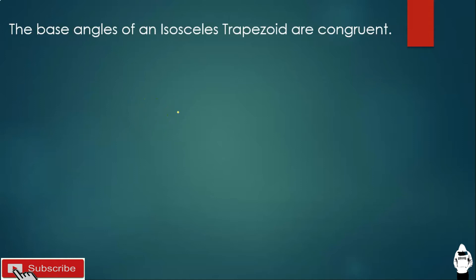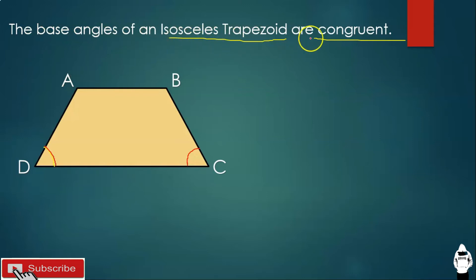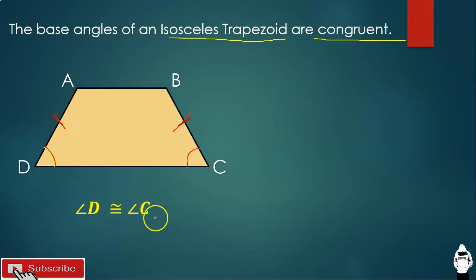The first theorem of an isosceles trapezoid is: the base angles of an isosceles trapezoid are congruent. Let's have this figure — trapezoid ABCD. The base angles here are angle D and angle C. Since this is isosceles, side AD is congruent to side BC. Therefore, angle D is congruent to angle C.